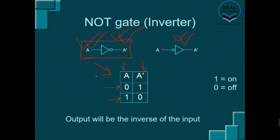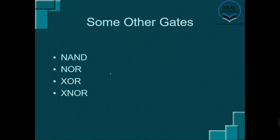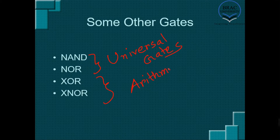There are some other types of gates in digital logic design too. These are not known as basic gates. These gates are NAND, NOR, XOR, and XNOR. NAND and NOR are usually known as universal gates — we'll talk about that in a few minutes. XOR and XNOR are actually called arithmetic gates.